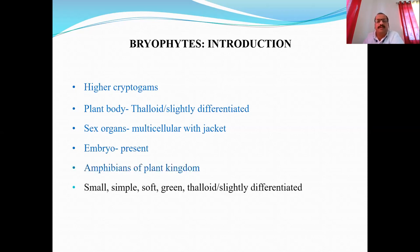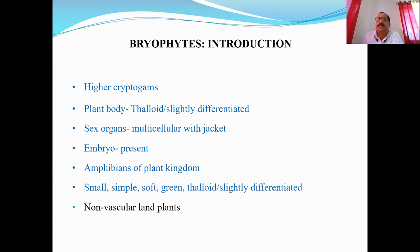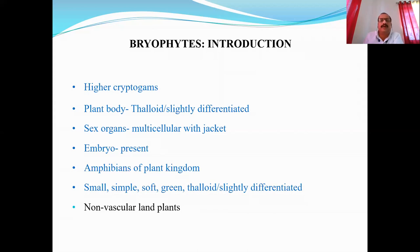Bryophytes are small, simple, soft, green, autotrophic plants with a thaloid or slightly differentiated plant body. These are non-vascular plants — soft plants due to the absence of vascular tissues. Xylem, the water conducting tissue, and phloem, the food conducting tissue, are both absent. Mechanical tissues like sclerenchyma are usually absent; the cells present are simple thin-walled parenchymatous cells. Bryophytes are lower in evolution than pteridophyta but more advanced than algae.